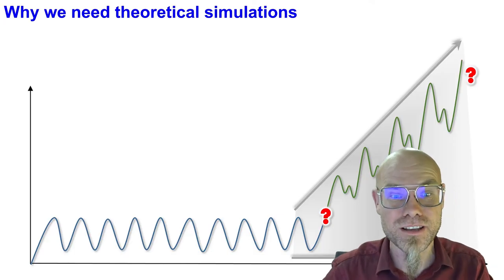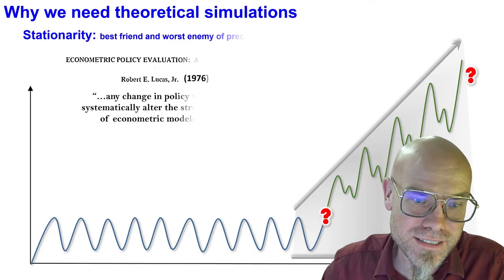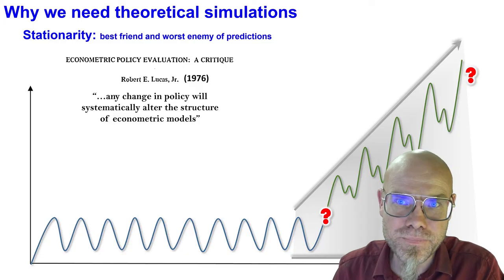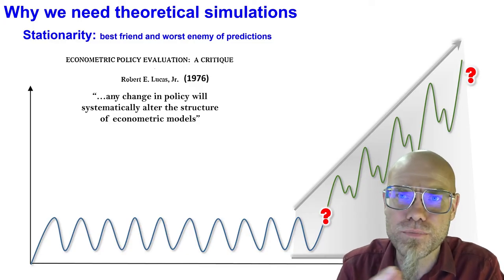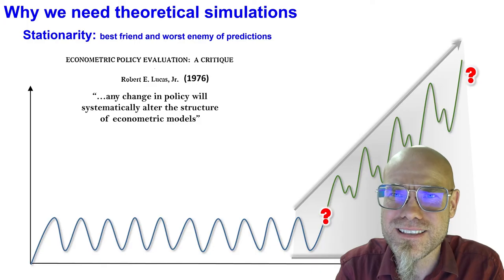Actually, the Nobel Prize winner Robert Lucas had this critique. It's known as Lucas critique. He says, well, any change in policy will systematically alter the structure of your prediction models. He said that back in the 70s.